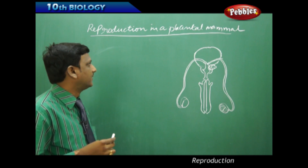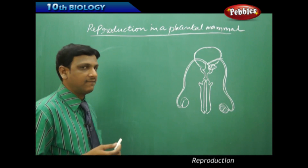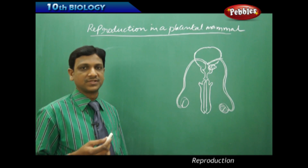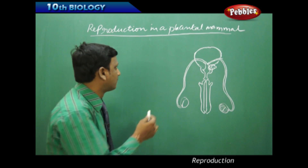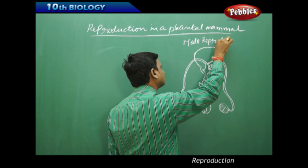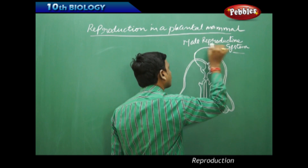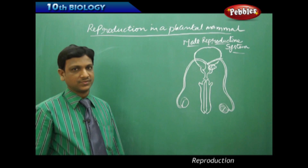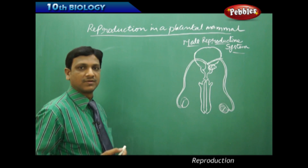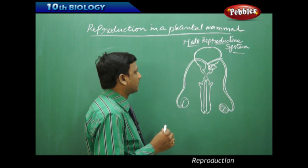Now let us look at reproduction in a placental mammal — humans. Placental mammals have male and female organisms with special, well-developed reproductive systems for the process of sexual reproduction. We are going to first discuss the male reproductive system. The male reproductive system has distinct parts which help in the production of male gametes.